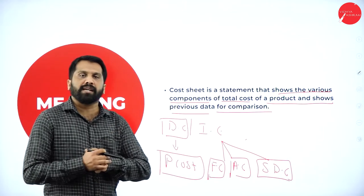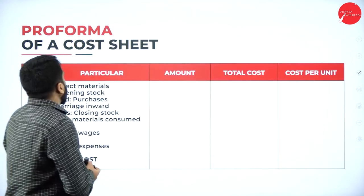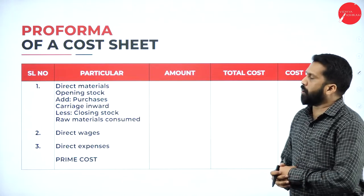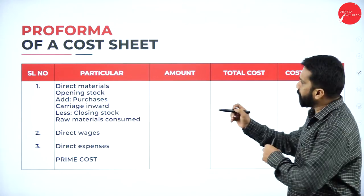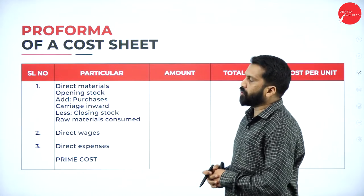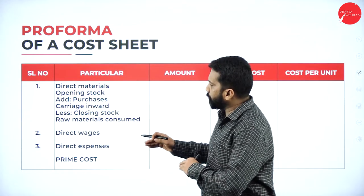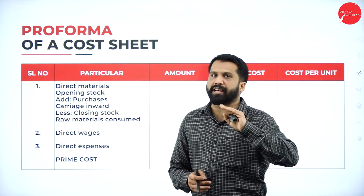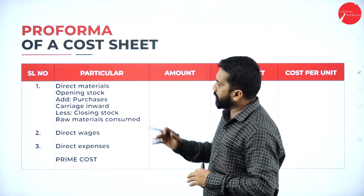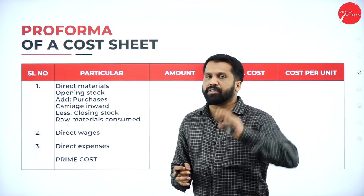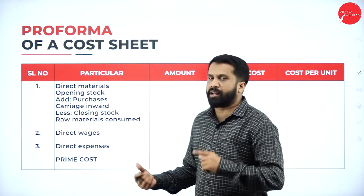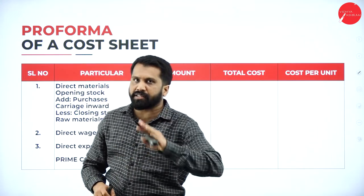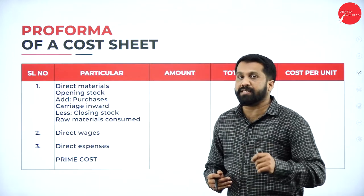Now the pro forma of cost sheet — the format is lengthy and you are supposed to remember the complete format. There is a pro forma that spans three to four pages in your book, but can be written on a single page. I have taken three to four slides to show the pro forma. Please take a screenshot at home and write it down continuously — there is no break, I have to write it continuously.